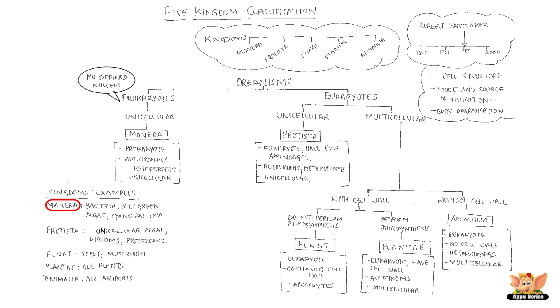Bacteria, blue-green algae, and cyanobacteria are a few examples of Monera.